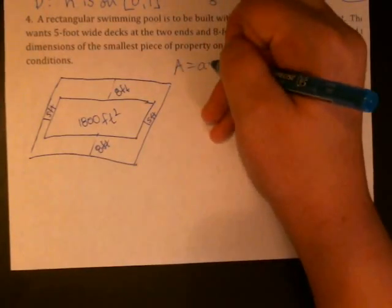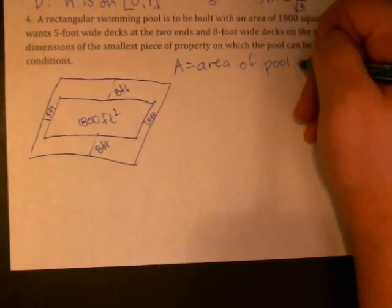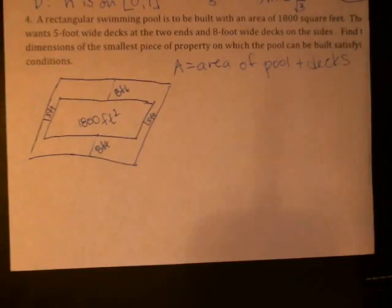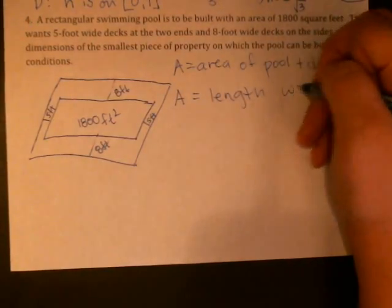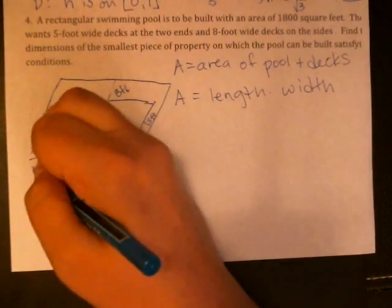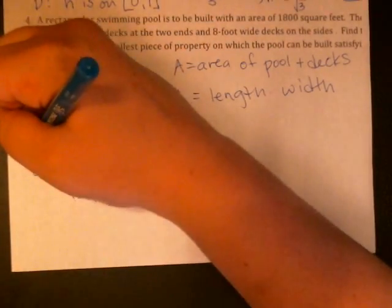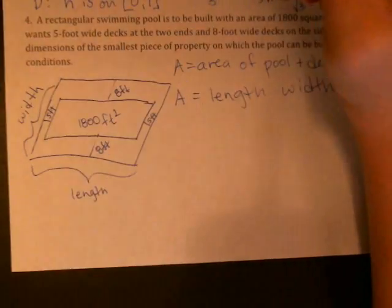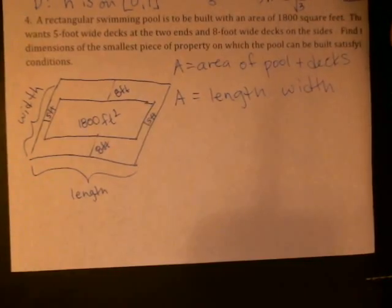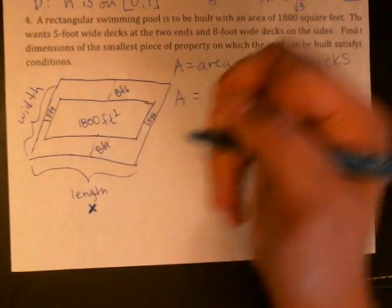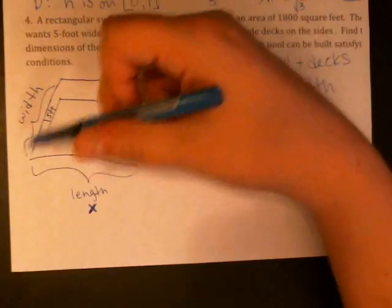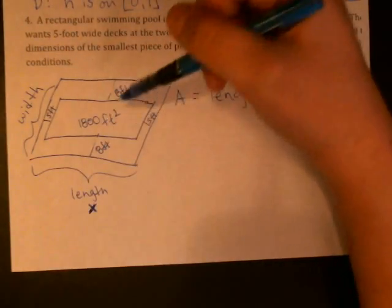So the piece of property is the area of the entire thing. So let's say A is equal to area of pool plus decks. So really that's just a rectangle, it's going to be a length times a width. You just want to make sure you're clear that we're talking about the entire thing. So this would be a length and this would be a width. So we need to think about what we're controlling in this problem. What we're asked about is the dimensions of the property. So let's say x is our length. If I pick an x, can I pick any old width? And the answer is no, we have a lot of restrictions.